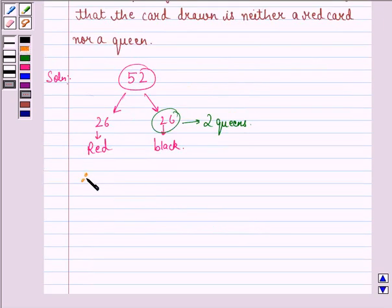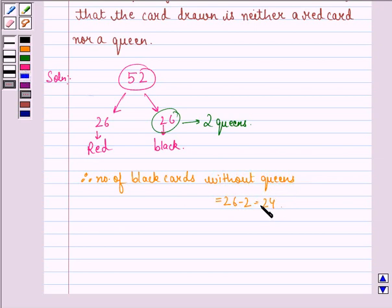Therefore, we can say that number of black cards without queens will be equal to 26 minus 2, that is equal to 24. Therefore, this is also the favorable number of elementary events.